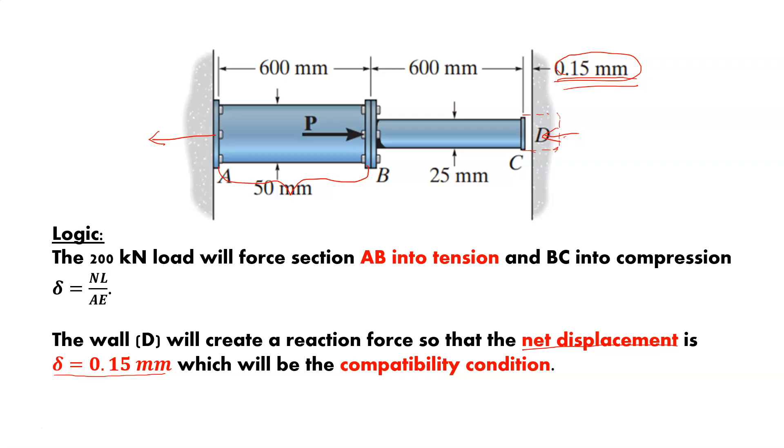So the wall D will create a reaction force so that the net displacement is basically just the gap, which will be the compatibility condition. So what we're looking at for that total deformation, which is only going to be 0.15, it's only going to fill the gap, and then it's going to stop due to the reaction of the wall. It's going to be the deformation from this load, which is going to push it to the wall, minus the deformation which is caused by this reaction.